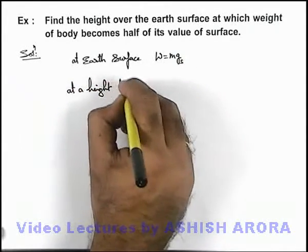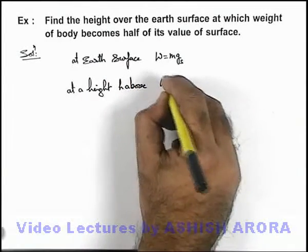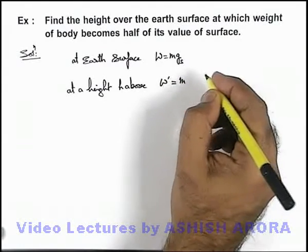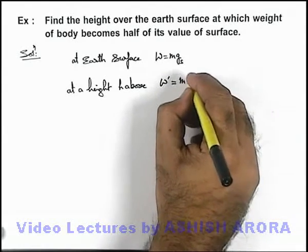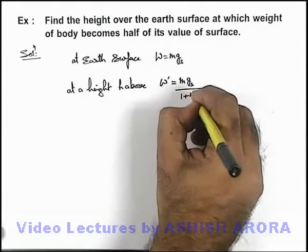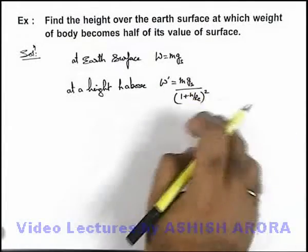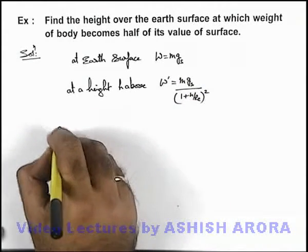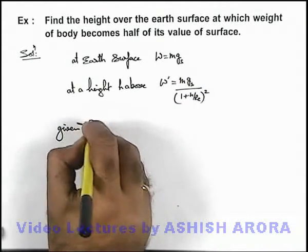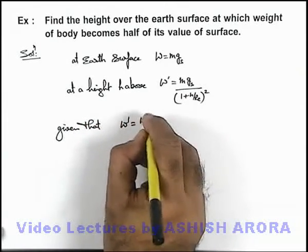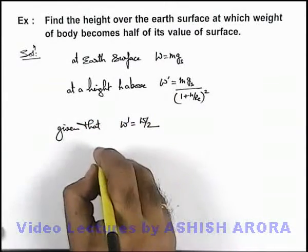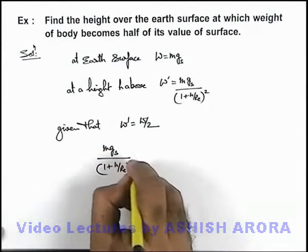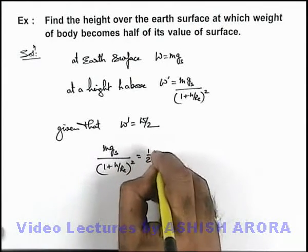At height h above, the weight W' can be written as m times g_s divided by (1 + h/R_e) squared, which is the acceleration due to gravity at height h above the Earth's surface. We are given that W' = W/2, so substituting the values: mg_s divided by (1 + h/R_e) squared equals half of mg_s.